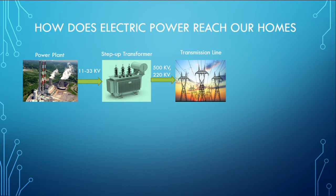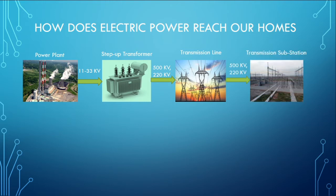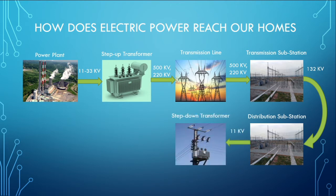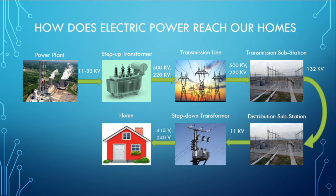The electric power is transmitted on high voltage transmission lines, which are then fed to a transmission substation. The transmission substation steps down these voltages to 132 kV, which are then fed to a distribution substation. The distribution substation further lowers the voltages to 11 kV, which is fed to a step-down pole transformer. These are the transformers that we see in the streets. This pole transformer further steps down the voltage to 415 V or 240 V, which is finally delivered to our homes.